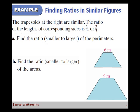So how would we use that? We'd use that to answer questions like this, or to look at relationships like this. It says the trapezoids at the right are similar. So they're telling us they're similar. That means their sides are in proportion, and their corresponding angles are congruent.